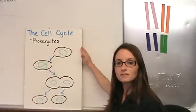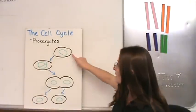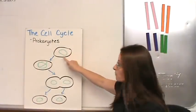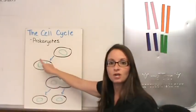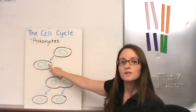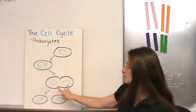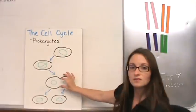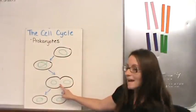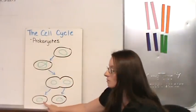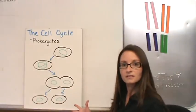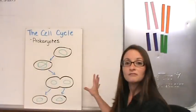Prokaryotes go through the cell cycle very simply. You have a single cell that has a single copy of the DNA. That DNA starts to copy itself. Once you have a second copy of the DNA, the cell membrane starts to pinch in. When that cell membrane starts to pinch in, it will eventually attach together in the center and then will break apart, and you get two separate cells. Prokaryotic cell cycle, very simple.